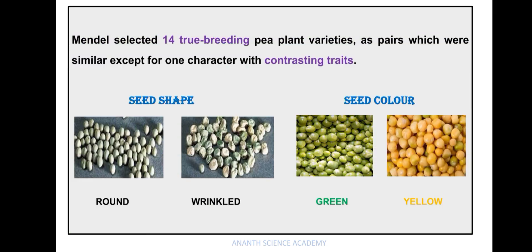Mendel selected 14 true breeding pea plant varieties as pairs, which were similar except for one character with contrasting traits. Let us see what those 7 characters with 14 contrasting traits are.